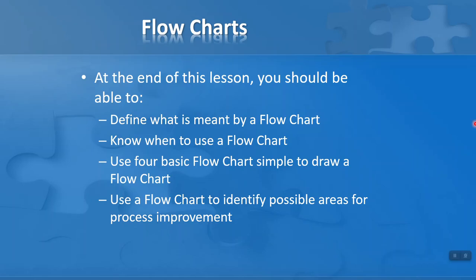So what are our objectives for this lesson? At the end of the lesson, you should be able to do the following. First of all, define what is meant by a flowchart. Then know when we should use a flowchart and we can use four basic symbols to draw a simple basic flowchart. Finally, we want to in this lesson use a flowchart to identify possible areas for process improvement and, of course, to solve problems.